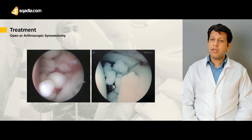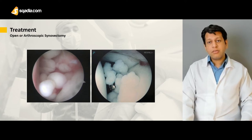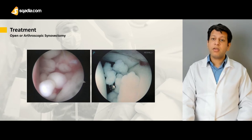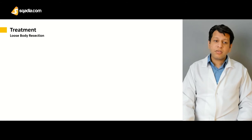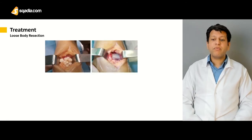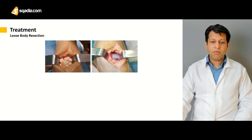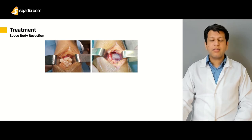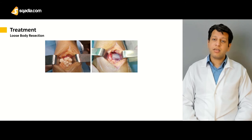But if for any reason arthroscopy is not available or expertise is not available, then we can go for open resection of the loose bodies by use of arthrotomy. A simple incision of the knee joint is made, all loose bodies are removed manually along with the synovectomy, and then the knee joint is thoroughly washed with lavage and closed back under strict aseptic conditions.